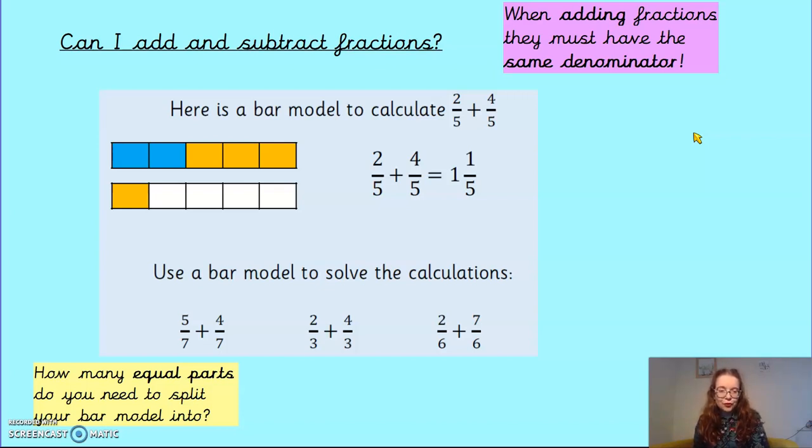OK, because if you're adding two fractions with different denominators, then the whole is going to be different and we won't be able to add them together properly. OK, so here is an example using my favourite, the bar model. Here is a bar model to calculate 2 fifths plus 4 fifths.